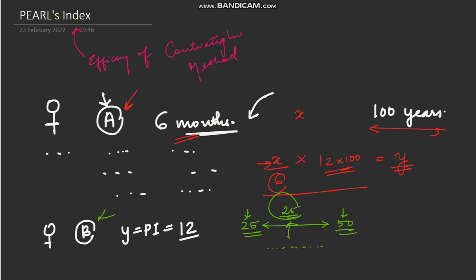If in 100 years it fails 12 times, then over 25 years it would fail 12 divided by 4, which equals 3 times. This is how you can compare different contraceptive methods and estimate how many times a method is likely to fail, based on the standardized Pearl's Index.